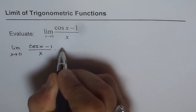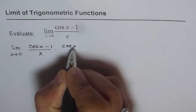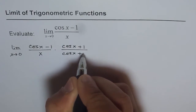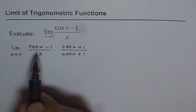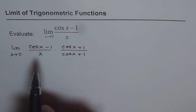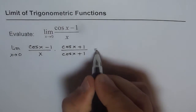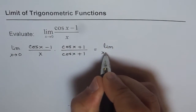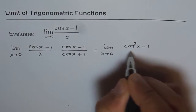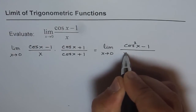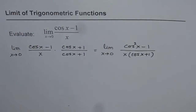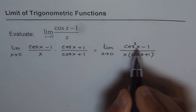Multiply and divide by cos x plus 1. When we do that, the numerator becomes cos squared x minus 1 by the difference of squares. So we get this equals limit x approaches 0 of cos squared x minus 1 over x times cos x plus 1.